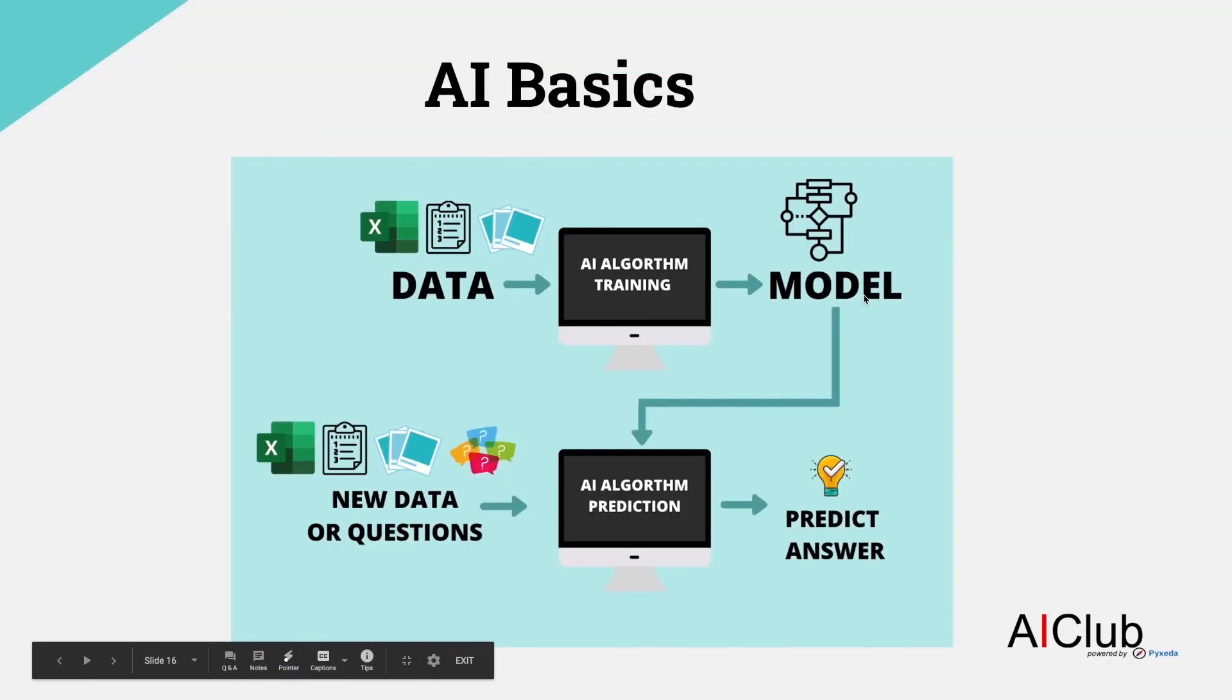And once a model is created, it is capable of making predictions on new data that comes in. Now you can use this model in a second stage called the prediction stage, where you can provide it with any English sentence or even a paragraph, and the AI is going to predict if that sentence is happy or sad.